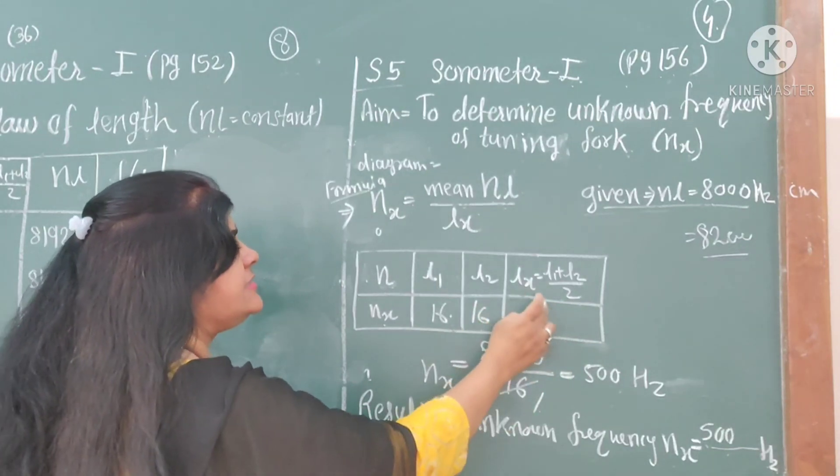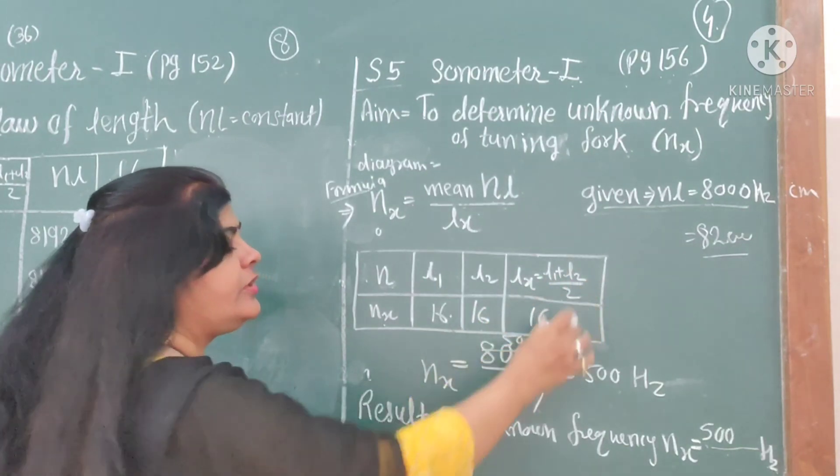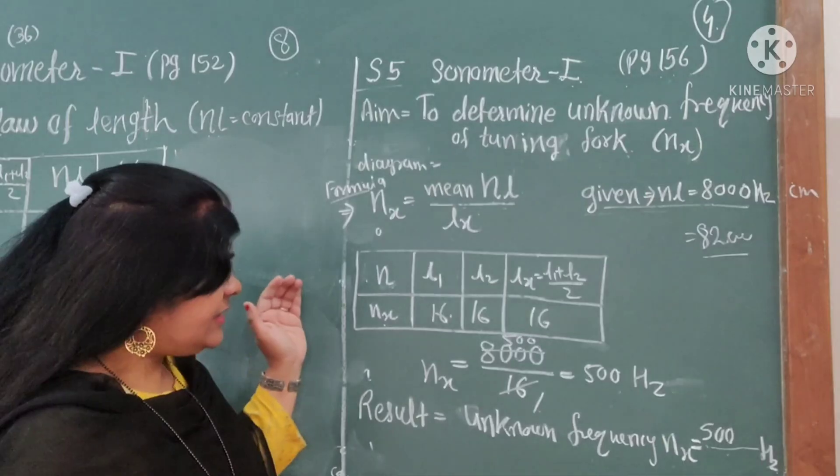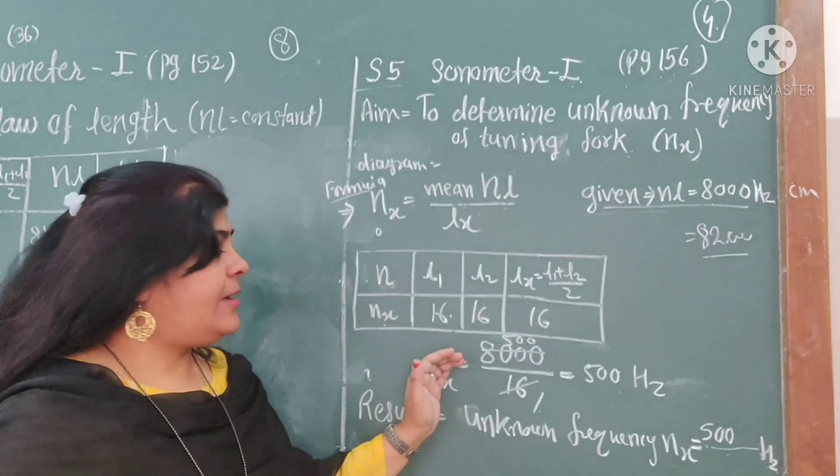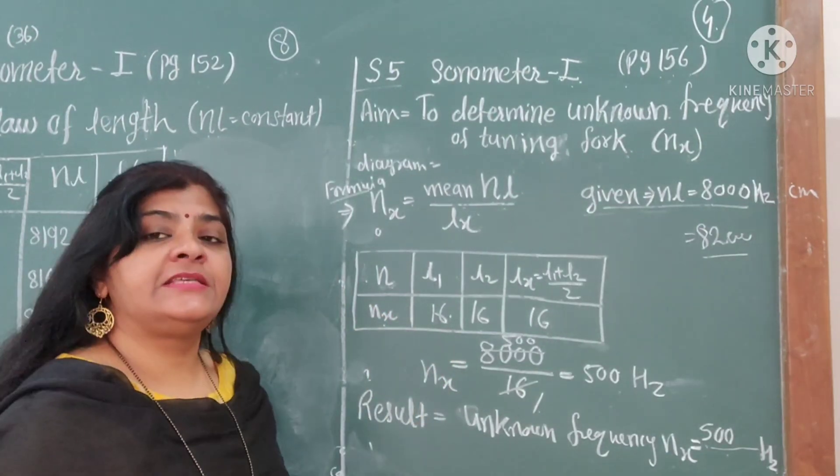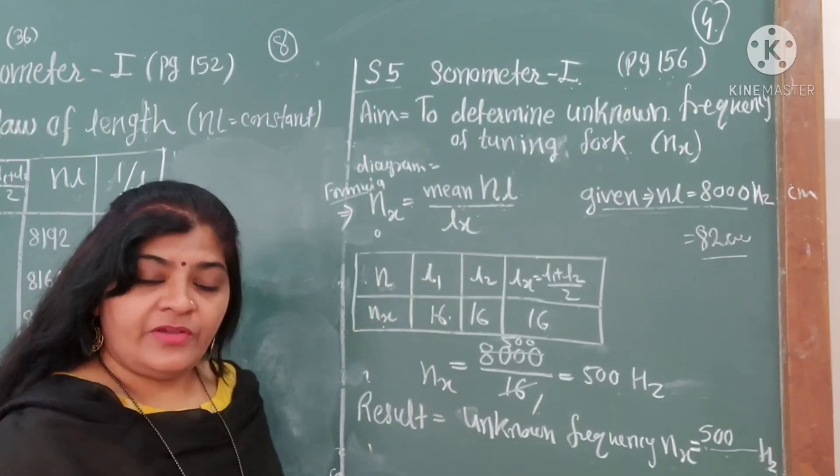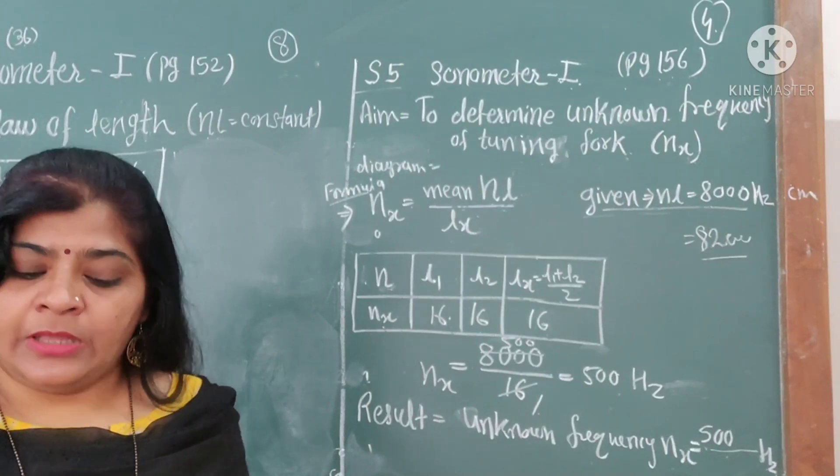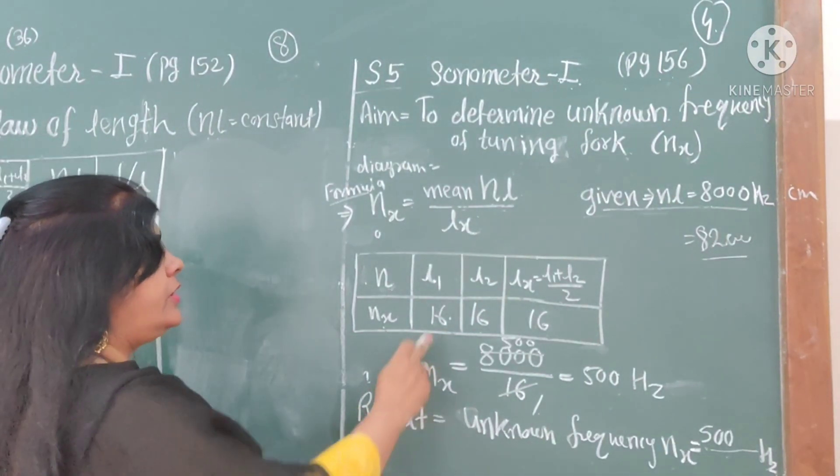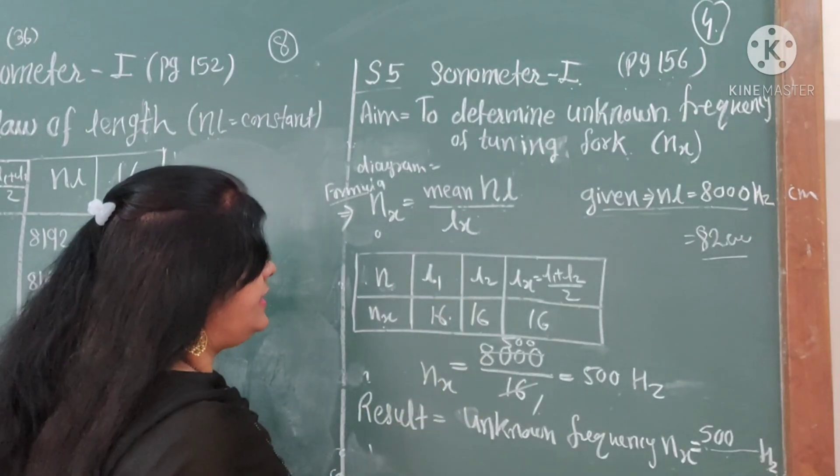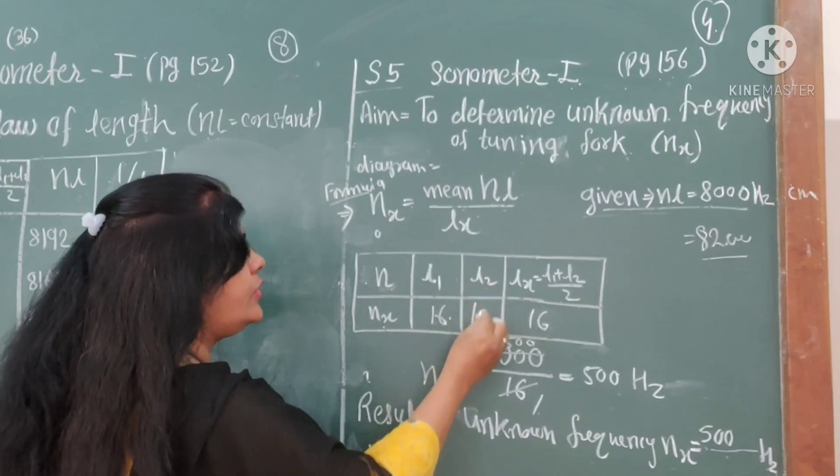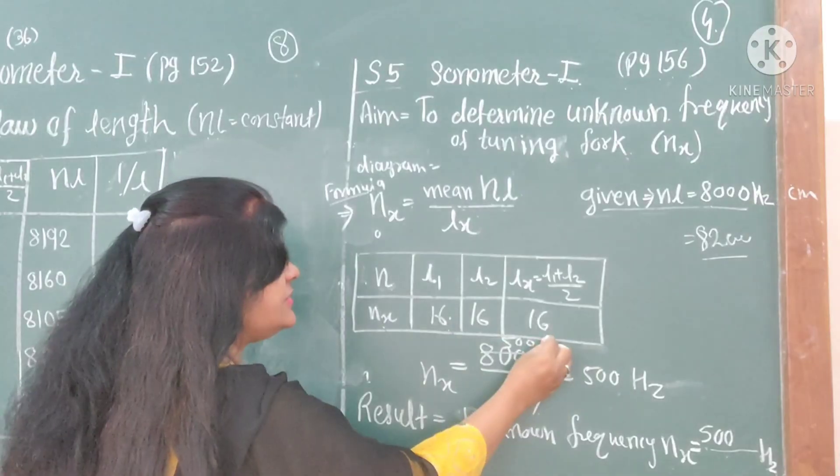Here I show one example: the reading is 16. When the paper falls down, I note down the value of LX, that is 16. L2 is 16. Mean value is 16.